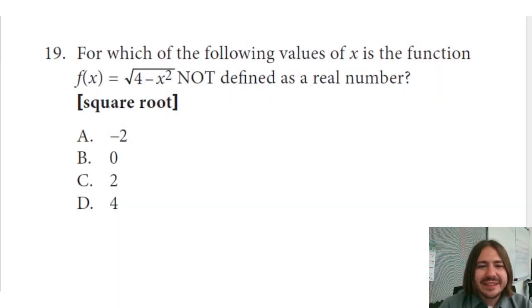Hey y'all, welcome back. Number 19 says, for which of the following values of x is the function f(x) equals the square root of 4 minus x squared, not defined as a real number?